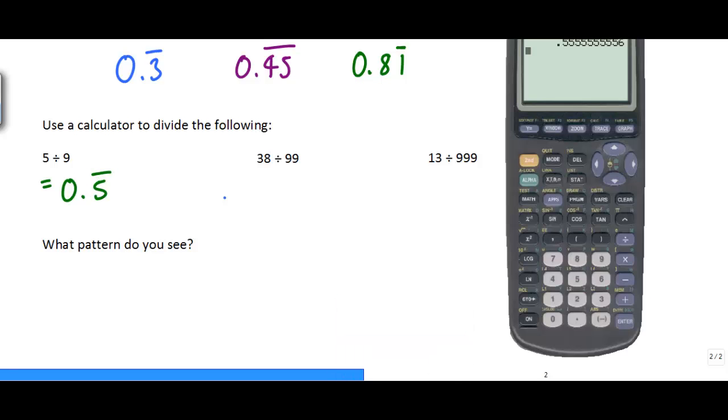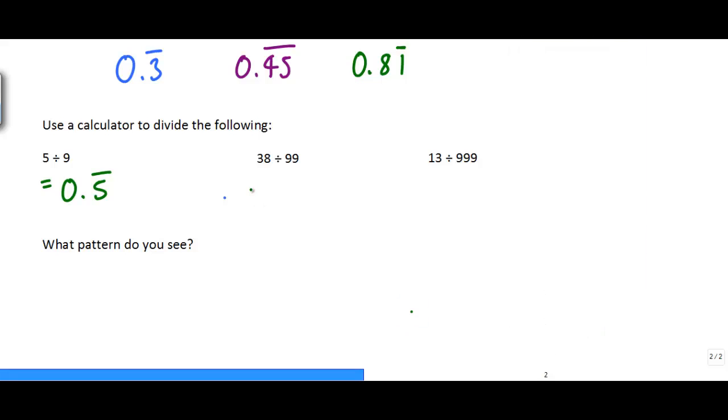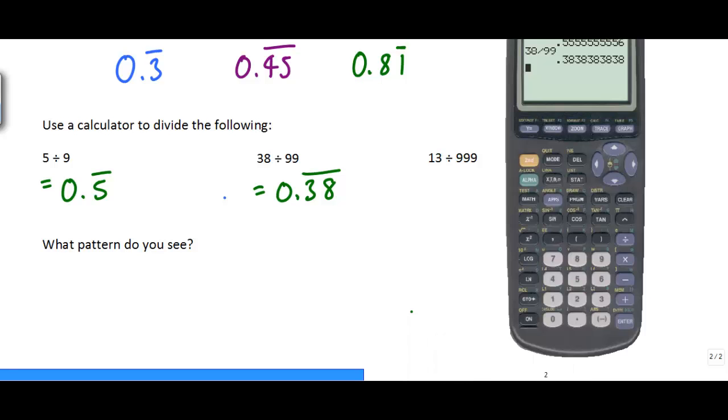The next one, 38 divided by 99 looks like 383838. So this is 0.38 repeating. And this one here, 13 divided by 999, 15 divided by 999 is 013013. And all of that is repeating over and over again.